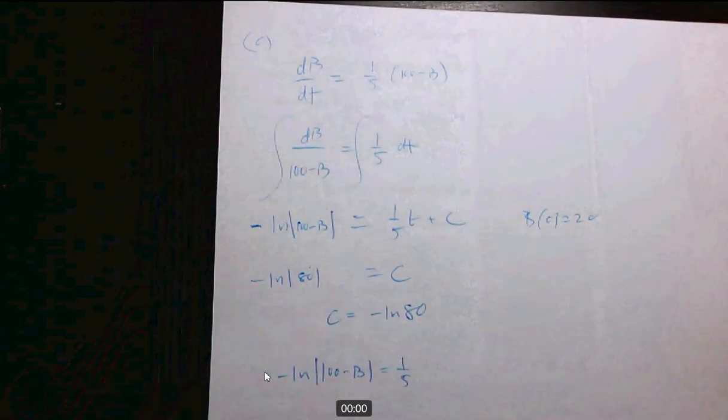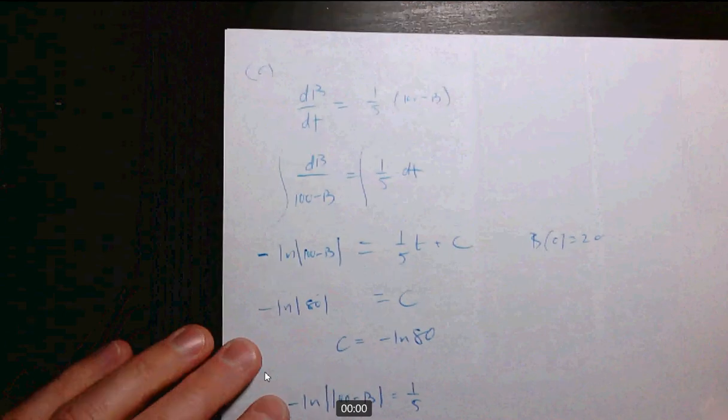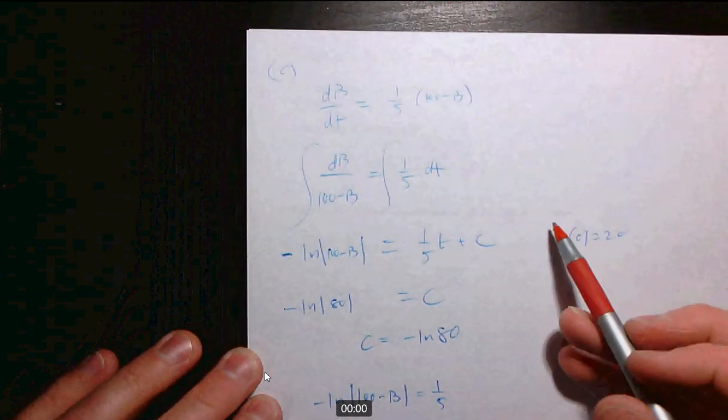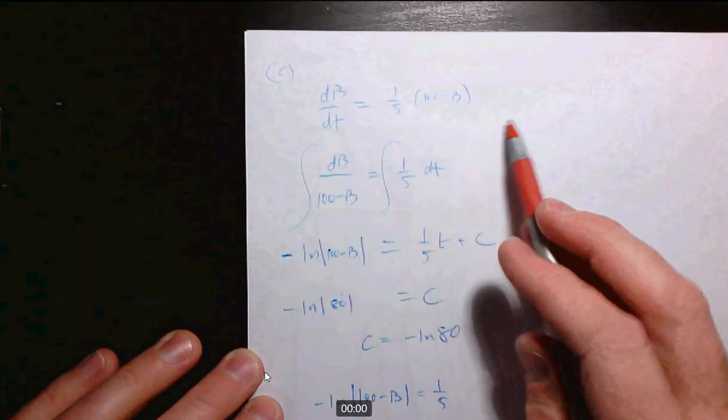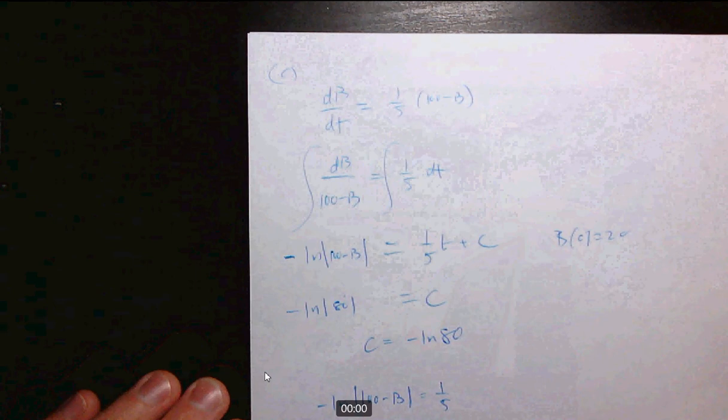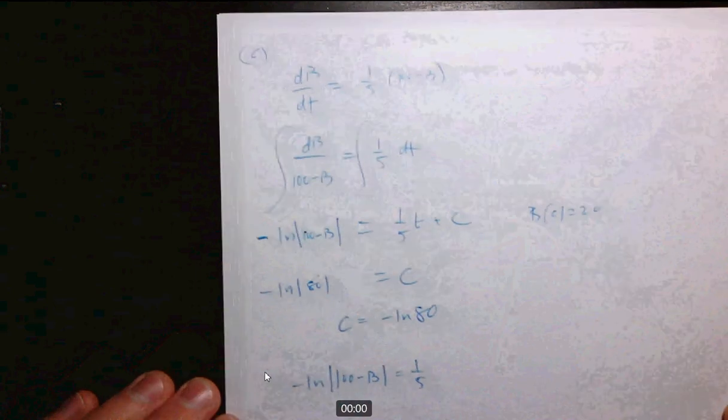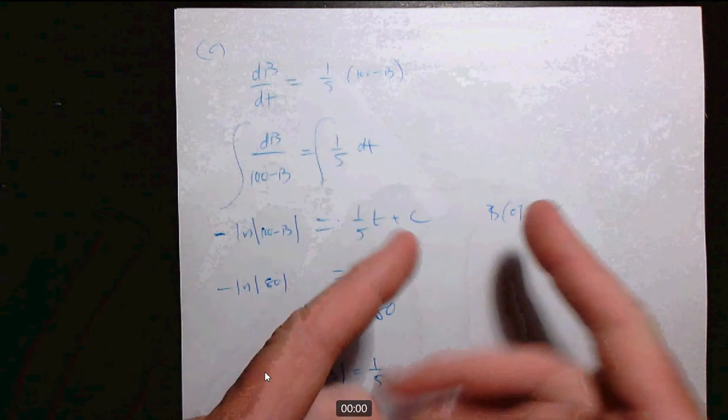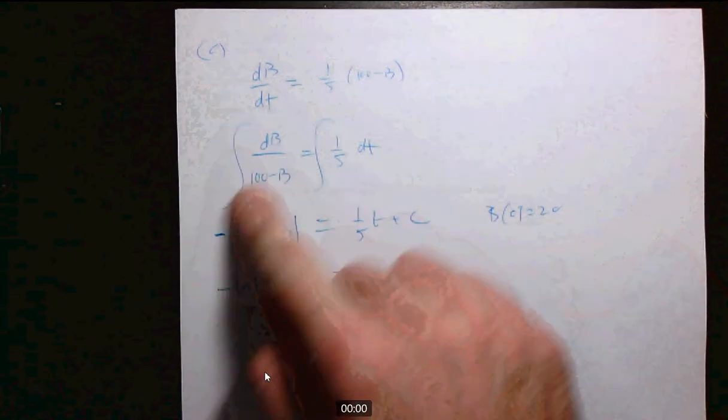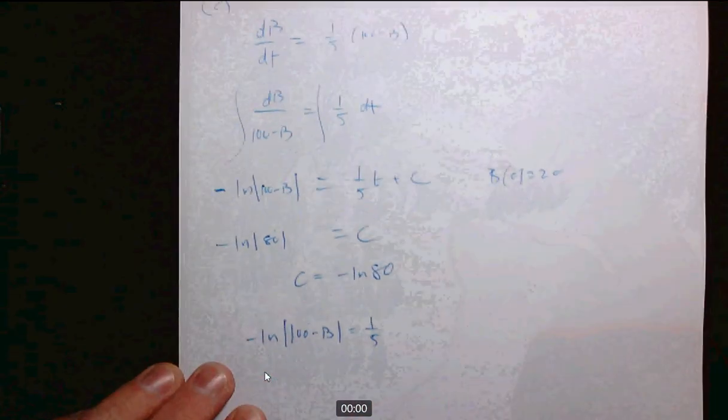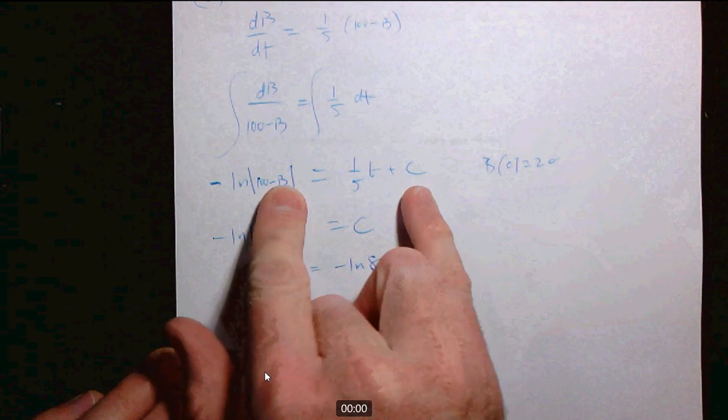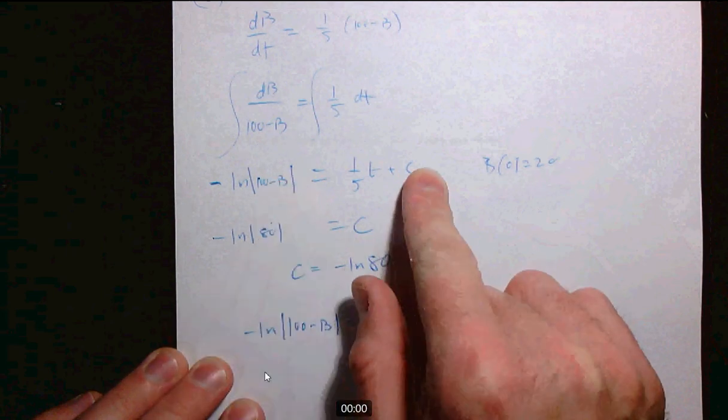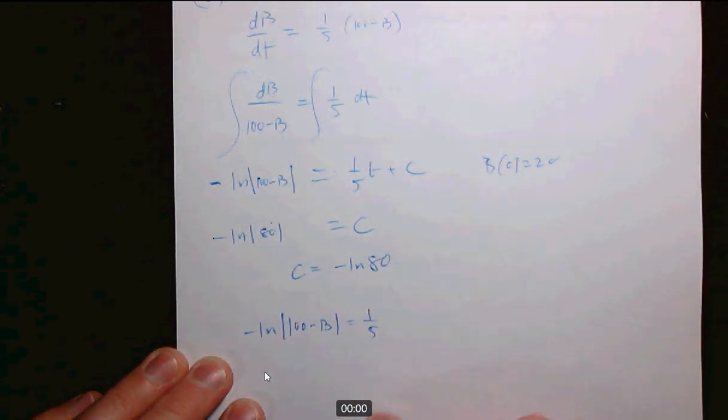Part C, again, people generally did well. Just a couple of little things. Number one, after you separate variables, almost all of the differential equations you deal with on the AP exam will be separable, meaning you can separate all the B stuff on one side here and all the T stuff on the other. Show the integral sign. Show that you're integrating. You know that there should be two Cs here, a C1 and a C2, but it's standard practice just to combine them into a single C. That's totally fine.